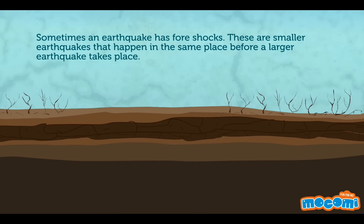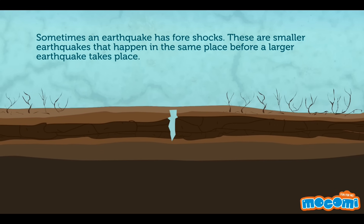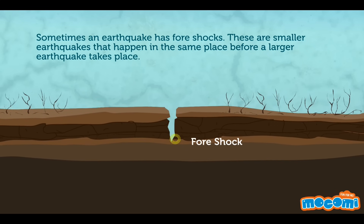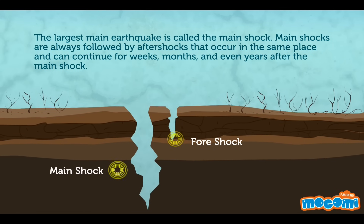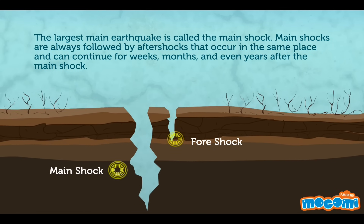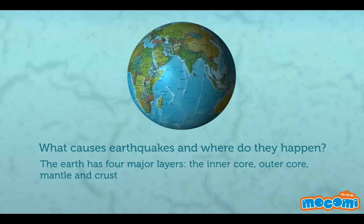Sometimes an earthquake has foreshocks. These are smaller earthquakes that happen in the same place before a large earthquake takes place. The largest main earthquake is called the main shock. Main shocks are always followed by aftershocks that occur in the same place and can continue for weeks, months, and even years.